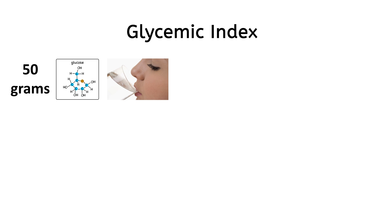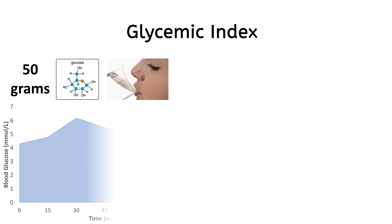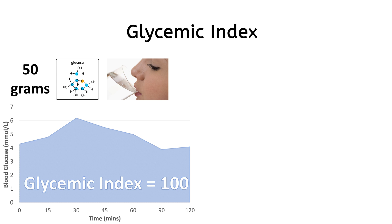Glycemic Index is a measure of the blood glucose raising potential of the carbohydrate content of a food, compared to a reference food, which is generally pure glucose. Suppose a person is given 50 grams of pure glucose orally — after some time the blood glucose levels will start rising and will eventually fall. Glycemic Index describes this blood glucose raising potential of the food being tested, with pure glucose counted as 100, as a standard reference.